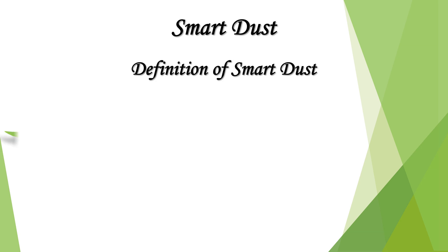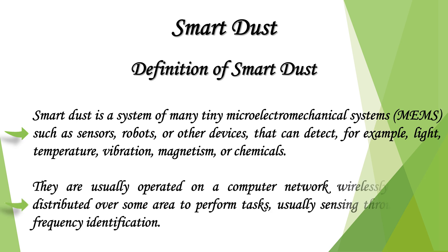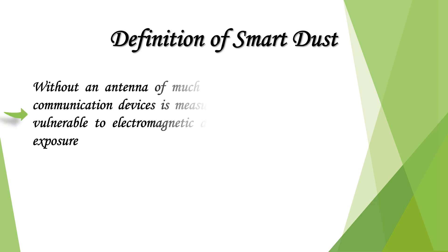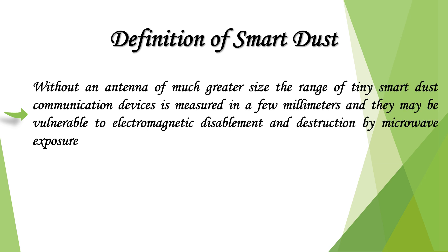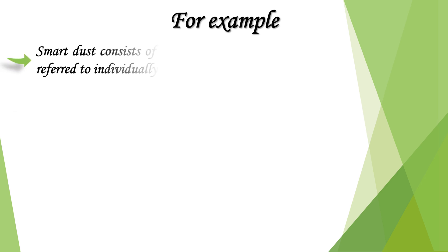Smart dust is a system of many tiny micro-electromechanical systems such as sensors, robots, or other devices that can detect light, temperature, vibration, magnetism, or chemicals. They are usually operated on a computer network wirelessly and distributed over some area to perform tasks, usually sensing through radio frequency identification. Without an antenna of much greater size, the range of tiny smart dust communication devices is measured in a few millimeters, and they may be vulnerable to electromagnetic disablement and destruction by microwave exposure.